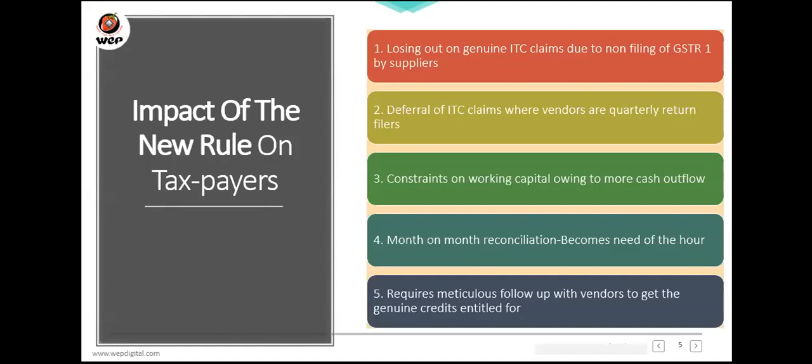Question: can we claim ITC for invoices with filing status 'N' in GSTR 2A? Currently it is not clear from the rule, so you can go ahead and calculate 120% on the entire value of GSTR 2A, even for entries with filing status 'N'.